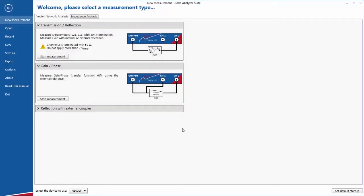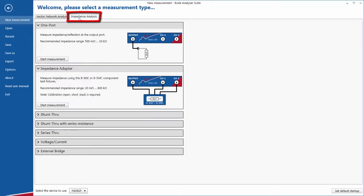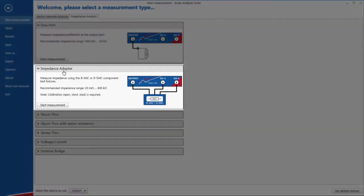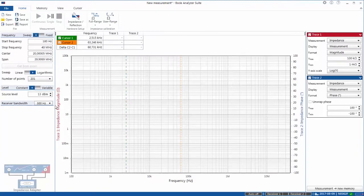When you run Bode Analyzer Suite at first, you will get a screen like this. This is the opening screen, and we are doing impedance analysis, so first thing that you need to do is click on this tab here, and then you see several options. We are using an impedance adapter, which is this box here, and therefore all you have to do is click on this, and this will automatically set up the Bode for the use of the impedance adapter.